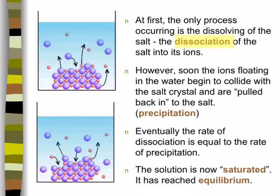Once you get some ions floating in the water, from collision theory, some of those aqueous ions will collide with the undissolved solid crystal and return to it — they're attracted again by the positive and negative ions in the crystal lattice. We say the ions begin to precipitate or crystallize again. Initially, the rate of dissociation is much larger than the rate of precipitation. But as more and more ions dissociate into the water, the rate of precipitation increases until the rate of dissociation equals the rate of precipitation — and now we have an equilibrium situation.